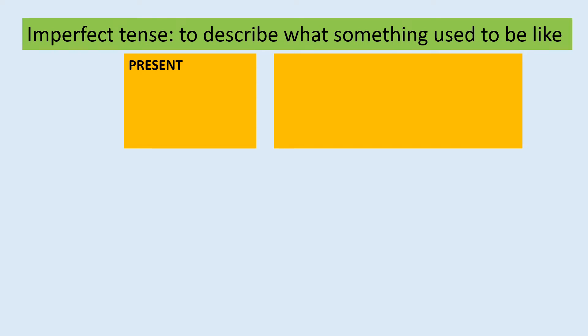Let's recap some forms in the present tense that you are familiar with. For example, hay, which means 'there is' or 'there are'. Tiene means 'it has'. Está means 'it is' — we use it for location. For example, el hotel está en Londres — the hotel is in London. As you see, there is a place mentioned after, so it means I'm locating the hotel in London. So we use está specifically for location.